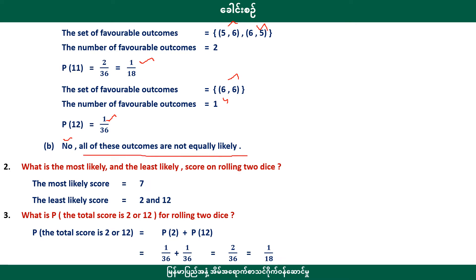What is the most likely and the least likely score when rolling two dice? The most likely score is 7, and the least likely scores are 2 or 12.